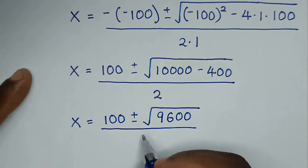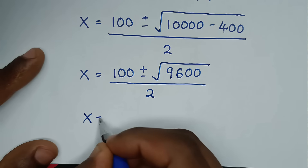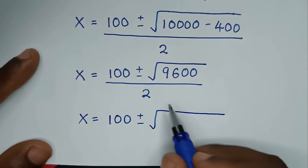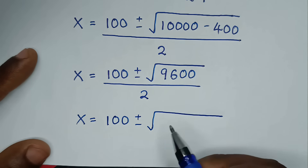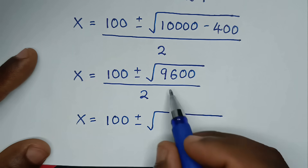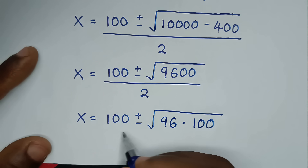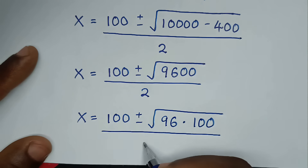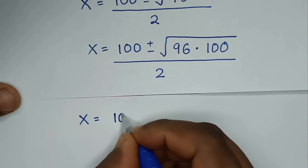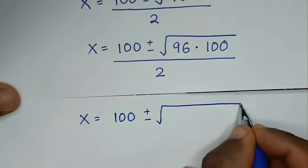In the next step, x is equal to 100 plus or minus square root of 9,600 over 2. You can factor out the two zeros from 9,600, which gives square root of 96 times 100, over 2. So it will be x is equal to 100 plus or minus square root of 96, times square root of 100, over 2.